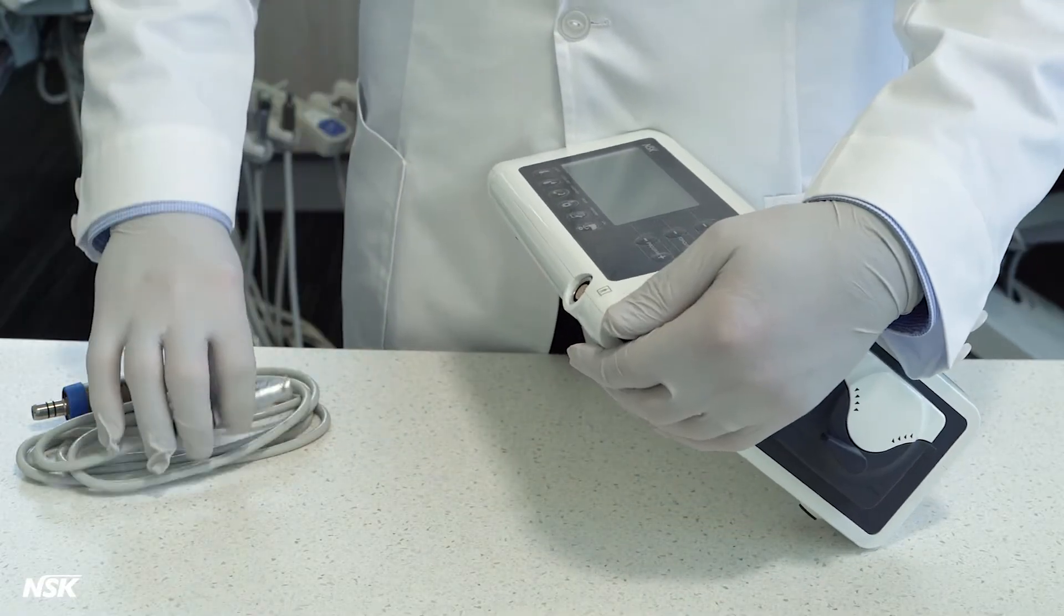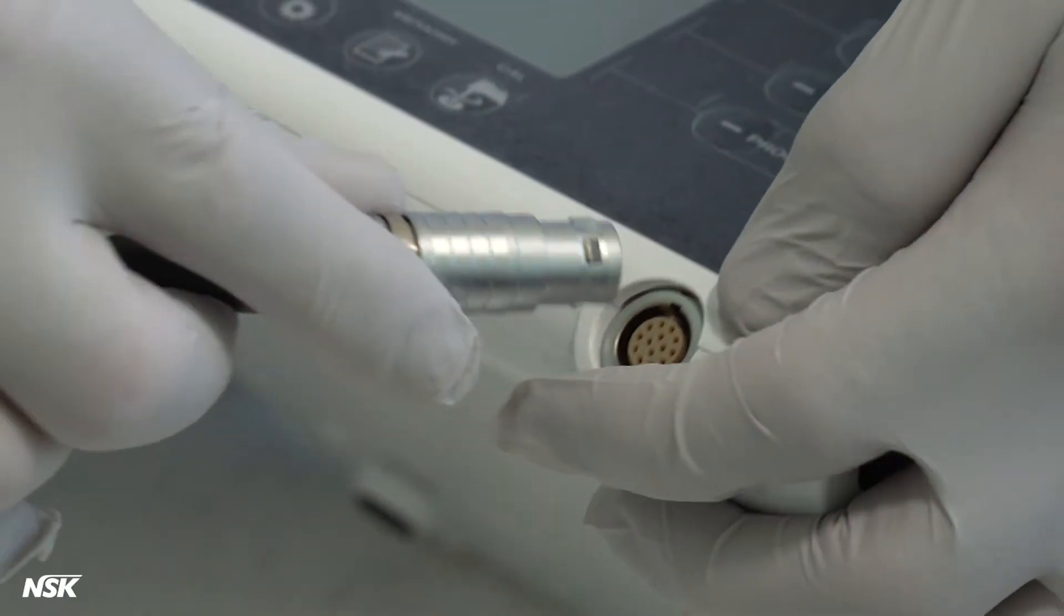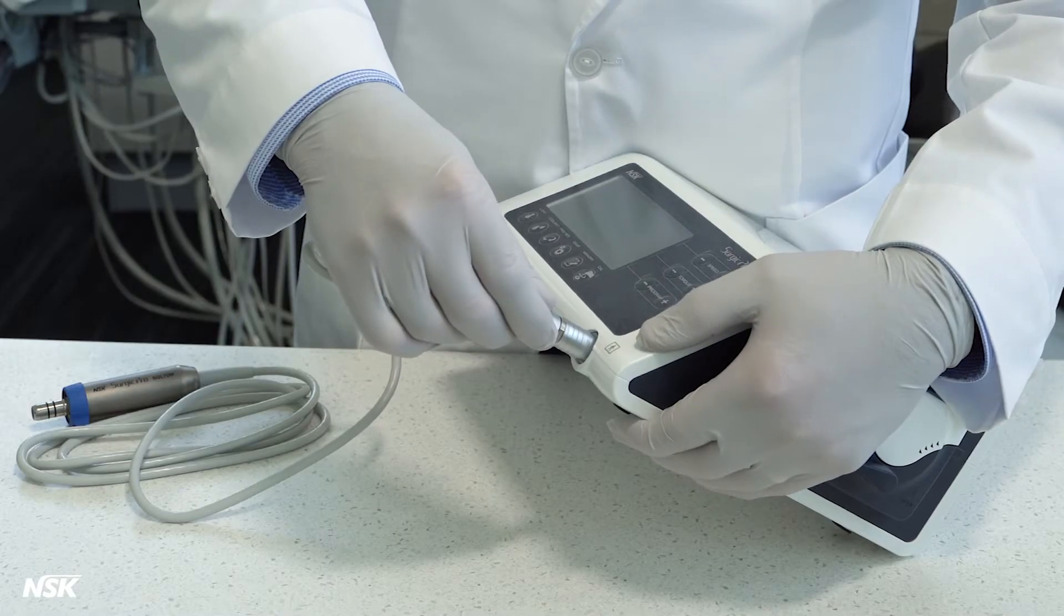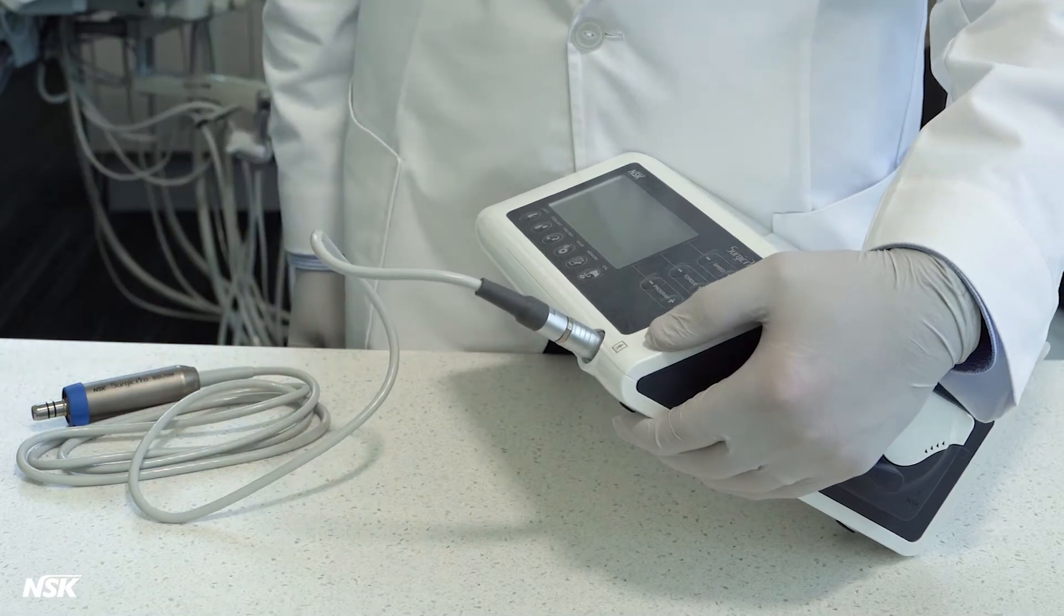Connect the motor cord by aligning the marks on the cord connector and the connection on the control unit. Push in the connector until you hear a click. Slightly pull the cord to make sure it's locked in place.